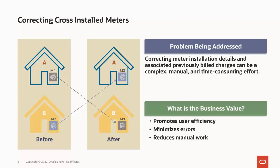In this release, we have introduced the correcting cross-installed meters capability. This helps business users correct cross-installed meters efficiently in a consistent manner, by guiding them through the common steps and actions via a process flow. Data entry and online transaction errors are minimized, as many steps involved in correcting cross-installed meters are now automated. As a result, manual work for a business user is reduced.